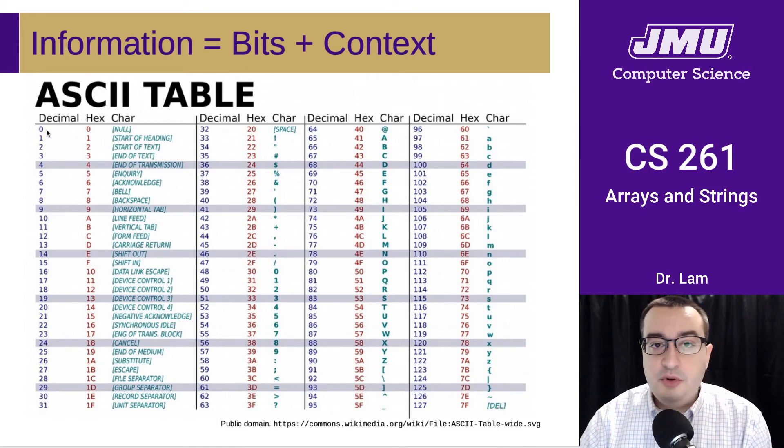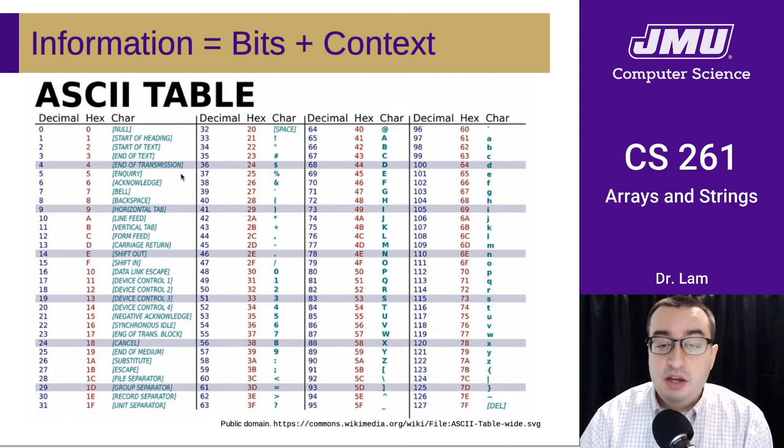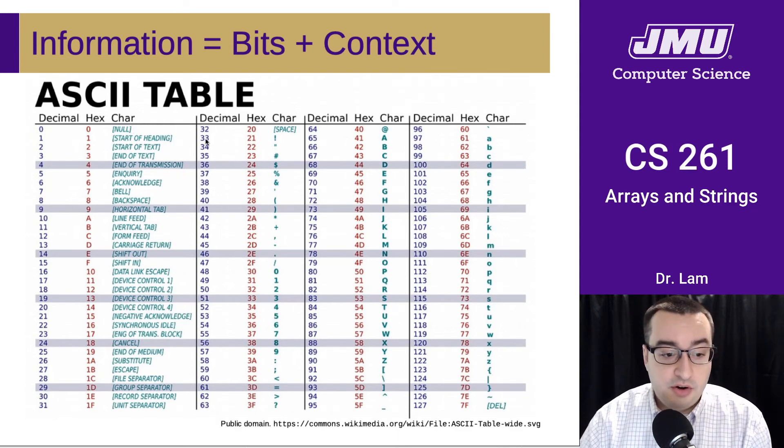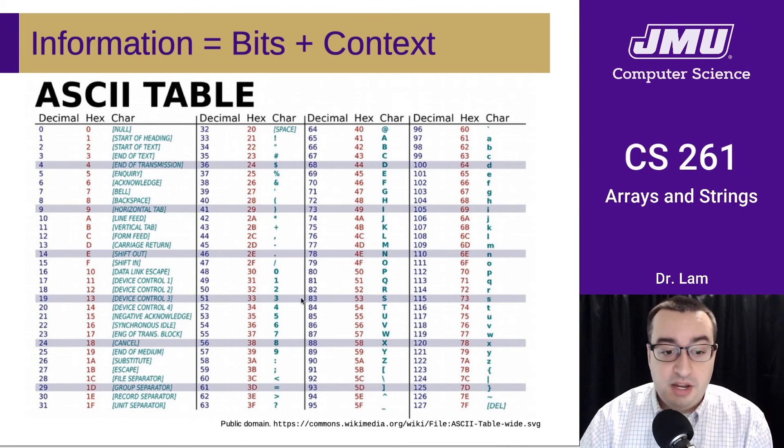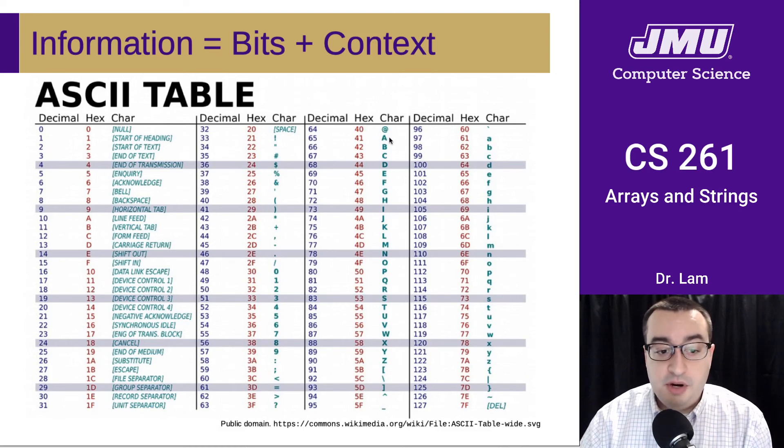This is the decimal number, this is its hexadecimal equivalent, and then this is what the actual meaning of that code is. You can see that 0 is the null character. There are some symbols over here; we have numbers here. Notice that the numbers are encoded using numbers that are different than the numbers, right? The character 3—the digit 3 in a string—is encoded using the number 51. We have both uppercase and lowercase letters. For instance, an uppercase A is stored using the number 65 and the lowercase A is stored using the number 97.